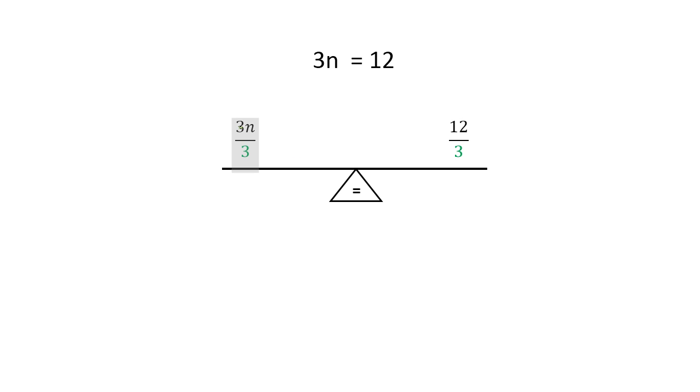So what happens when I take 3 divided by 3 is I get 1. Over here, 12 divided by 3 is 4. Since 3 divided by 3 is 1, I get 1 times n equals 4. Now we know that 1 times anything is itself, so I can rewrite that to be just n equals 4. That's my solution.